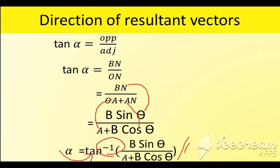So R gives the magnitude and alpha gives the direction of the resultant of the two vectors. This is about the triangle law of vectors. Thank you.